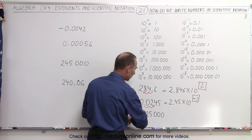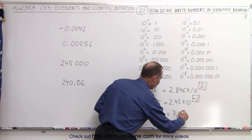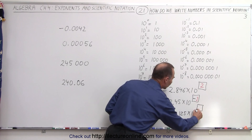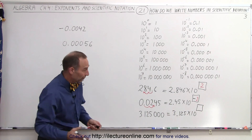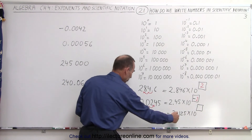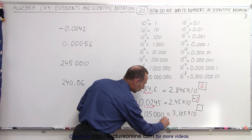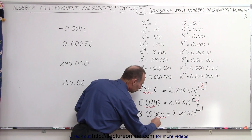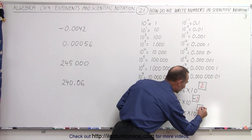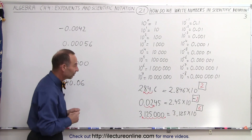On the next one, this is going to be written as 3.125 times 10 to some exponent. Again, that exponent will depend upon how many times we moved the decimal spot. In this case we move to the left — even though we don't write it, it's right over here. So we move it 1, 2, 3, 4, 5, 6 spots. 6 spots means we need the number 6 there. So it's 3.125 times 10 to the sixth.